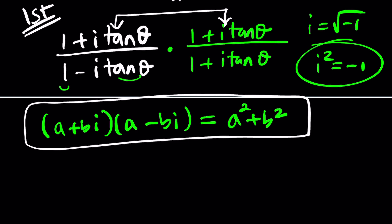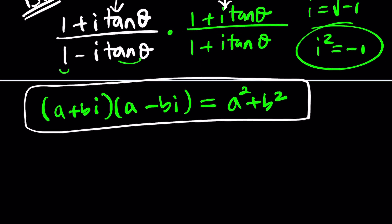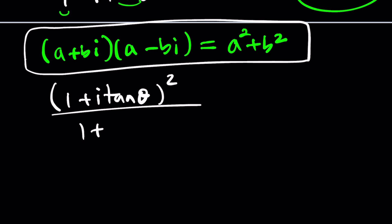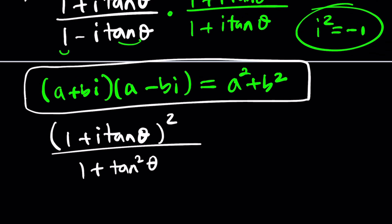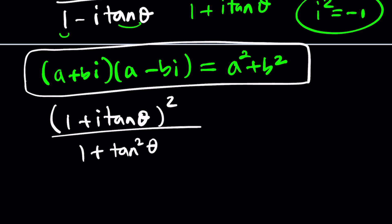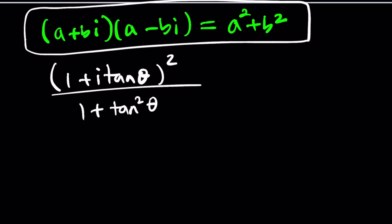So let's go ahead and see what happens here. In the numerator, we do have a perfect square. We're squaring this, right? So let me write it that way first. And then in the denominator, we have a squared plus b squared, which is 1 plus tangent squared θ. Later on, we can kind of deal with what it means, but let's go ahead and simplify the numerator first.